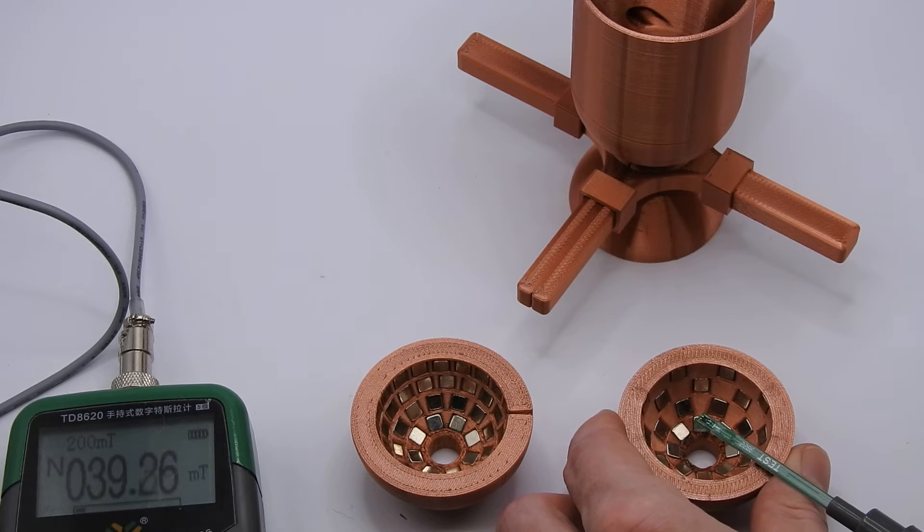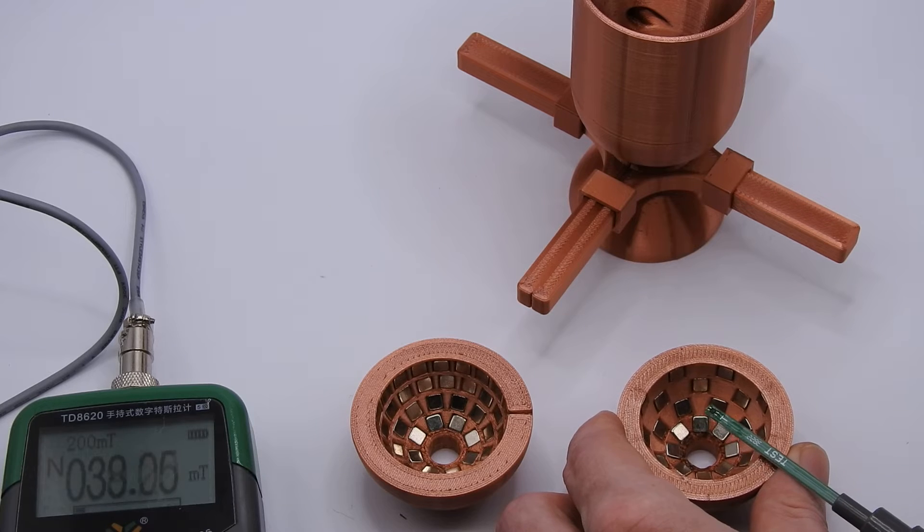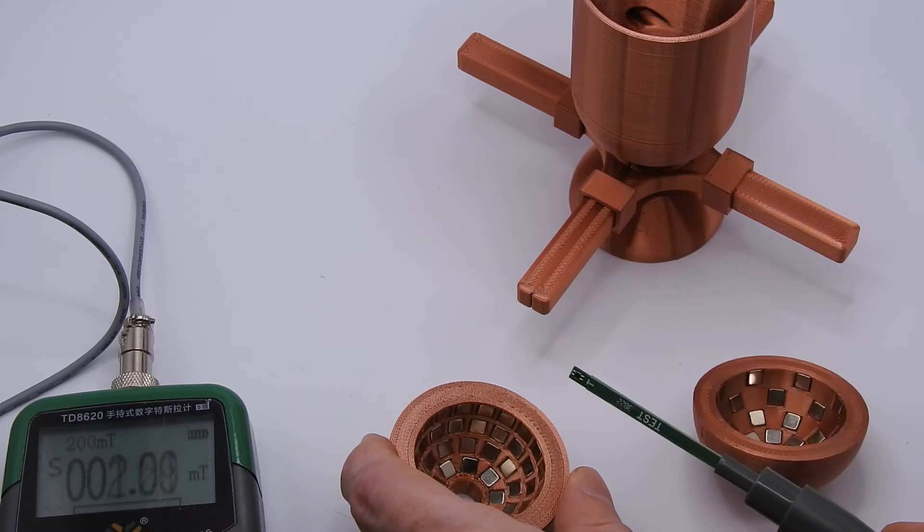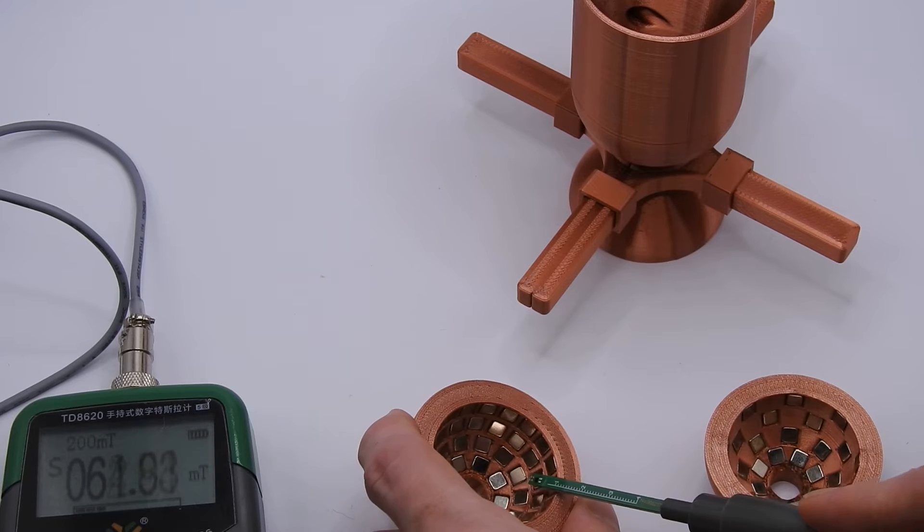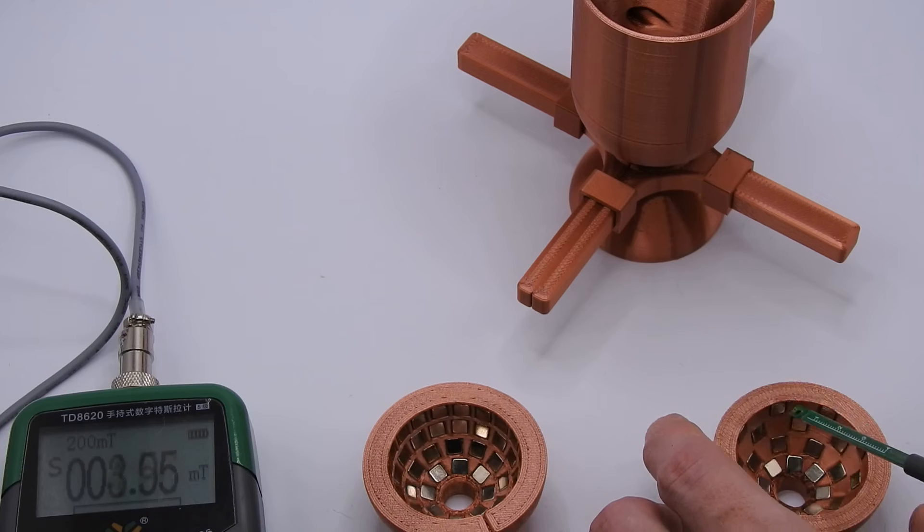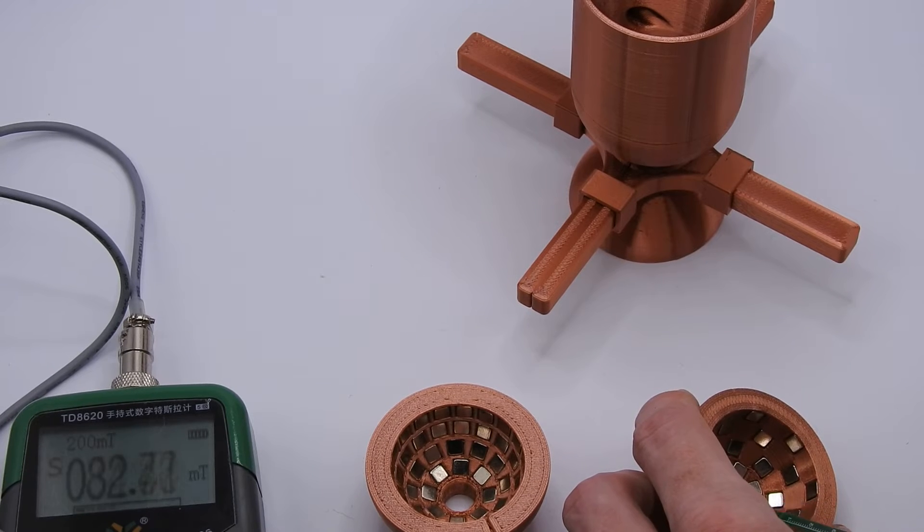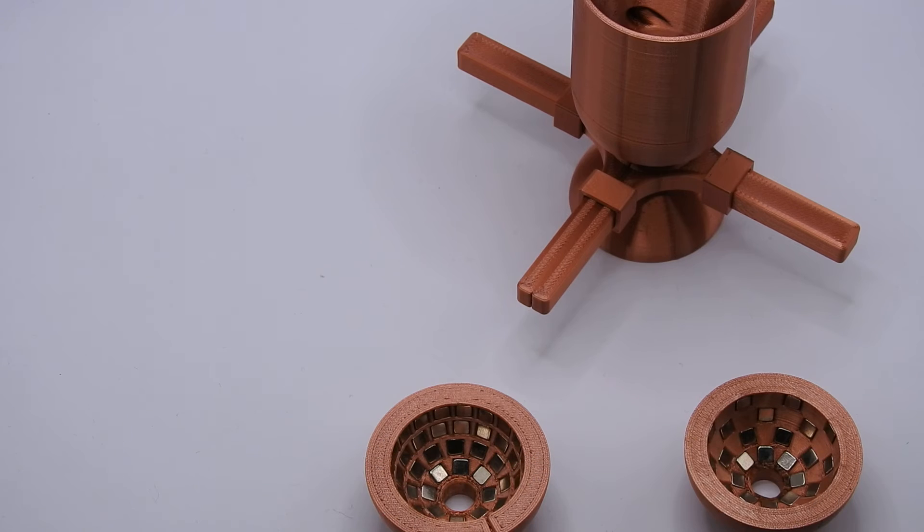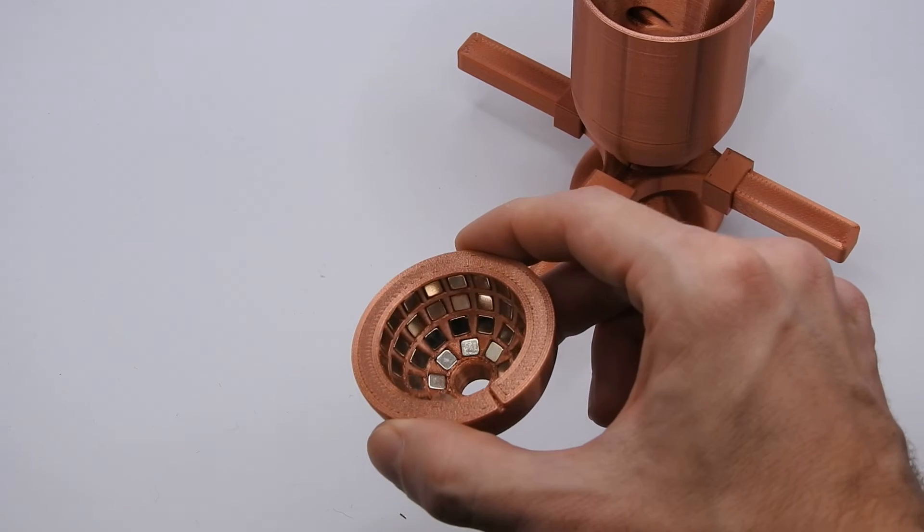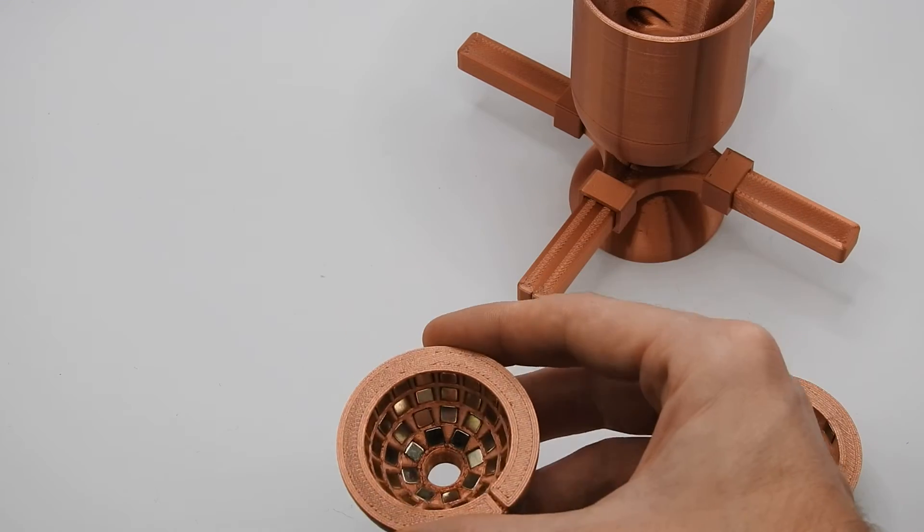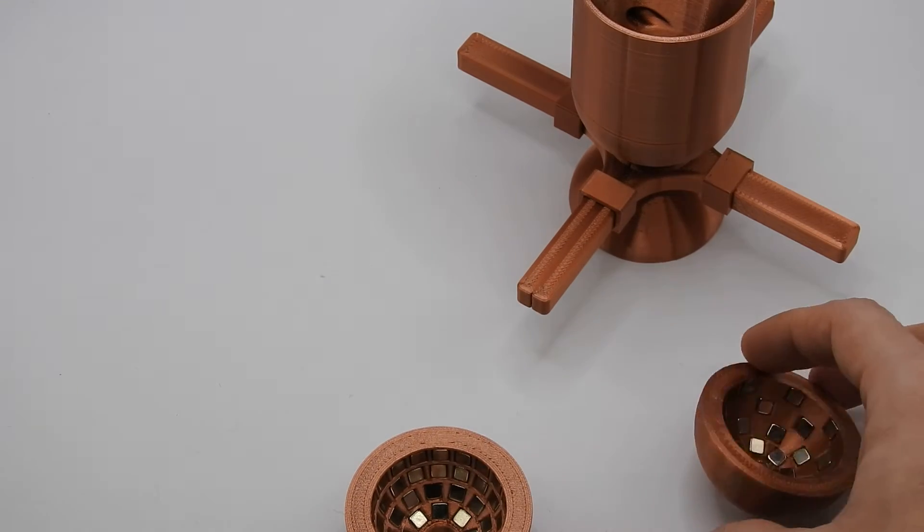And over here on this one, it is significantly weaker. It also depends on where you are measuring. If you put it close to here, you of course get higher values, same on the other side, but only if you're close to one of the magnets. This is just to show you that obviously with more magnets in the array of the same size, you get a much stronger field.